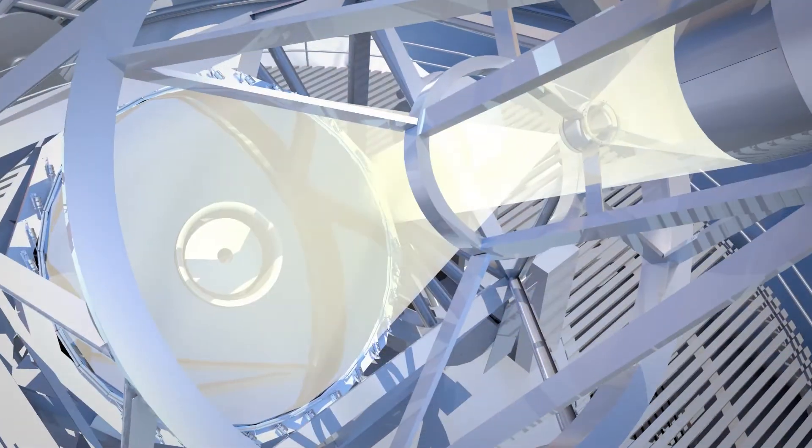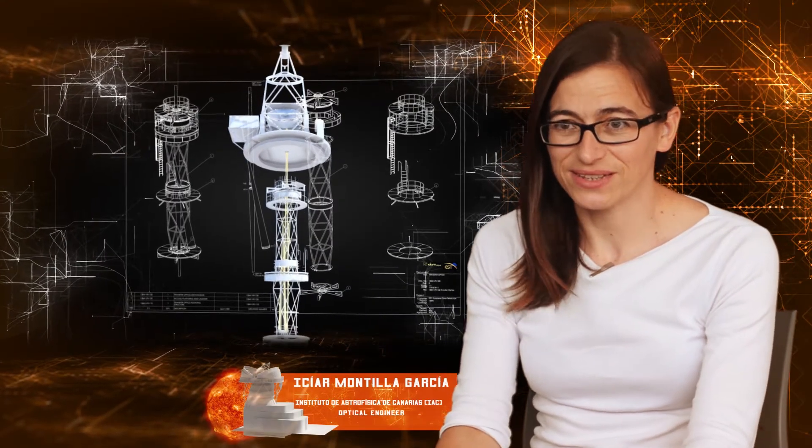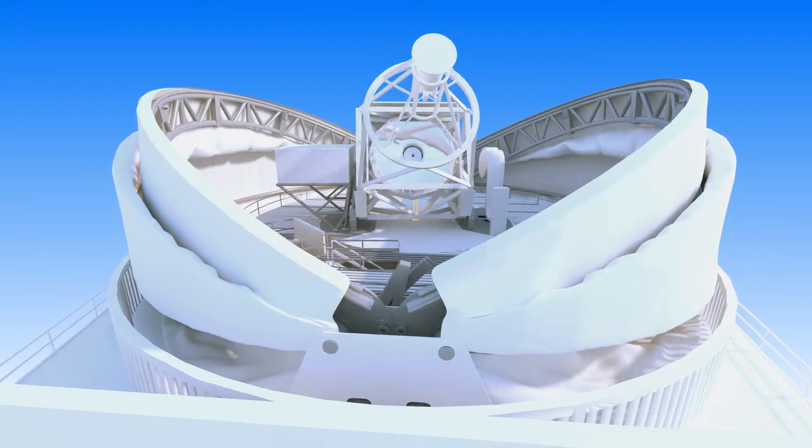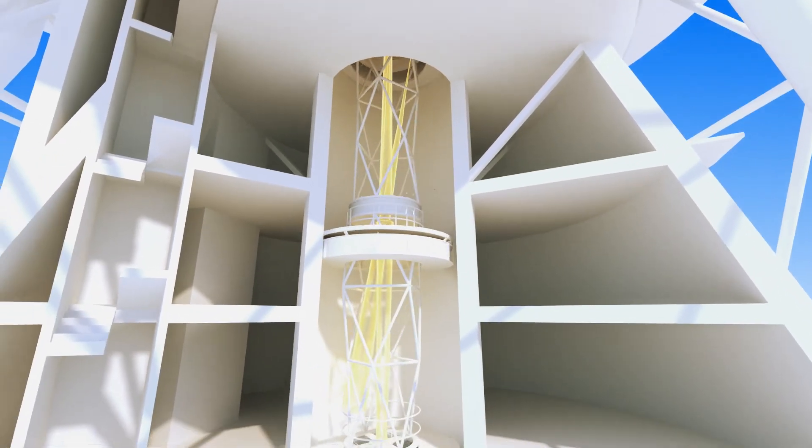The secondary mirror will transfer the light into a set of optical elements which conduct the light along the EST tower. They will rotate when the telescope moves following the Sun during observation. And they are one of the most important parts of the EST, its adaptive optics system.